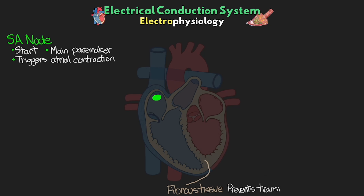This fibrous tissue actually prevents the transmission of signal. In about 60% of people, the SA node is perfused by the right coronary artery. The rest of the people are mostly perfused by the left coronary artery, although there are some people that are supplied by both.